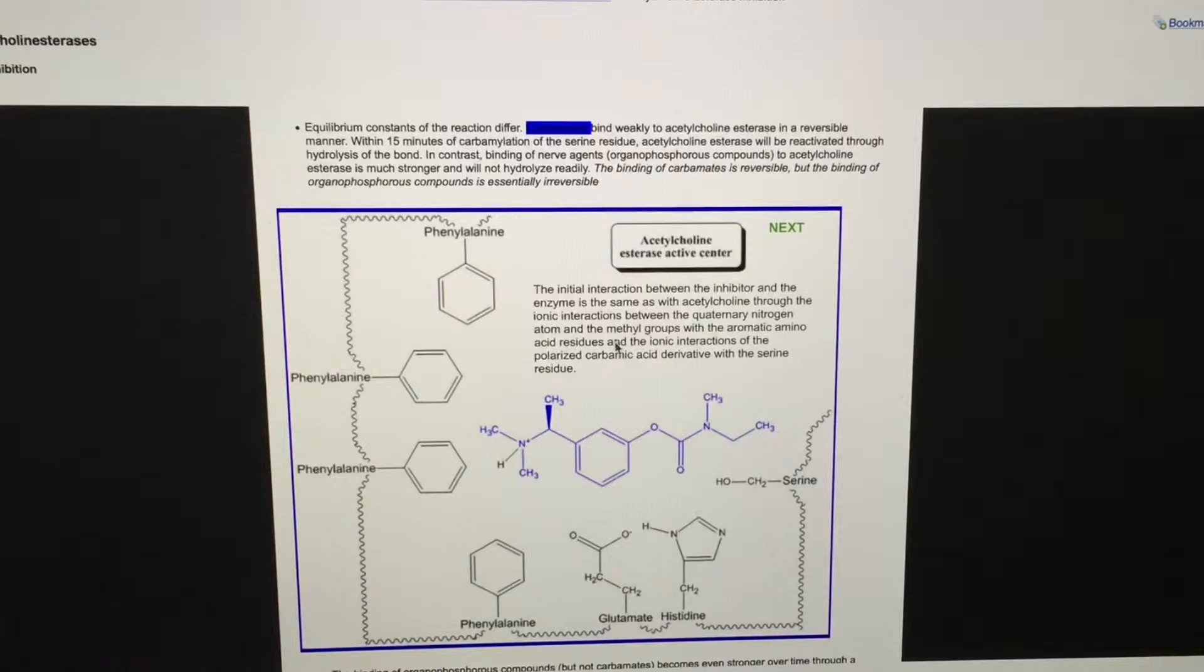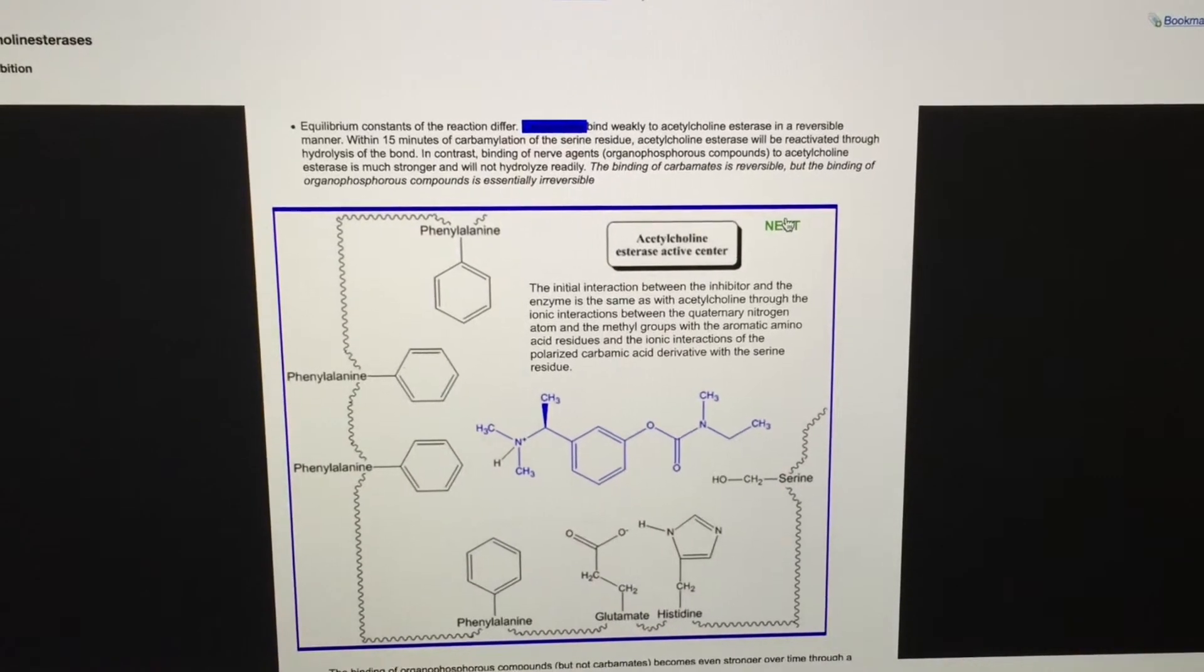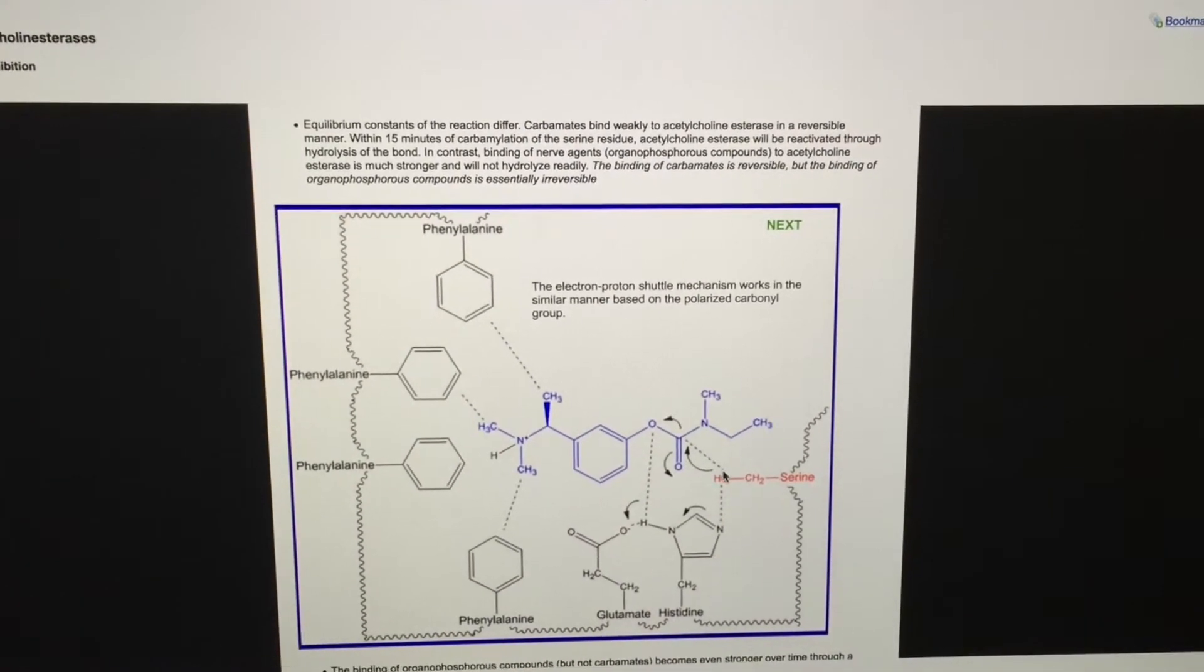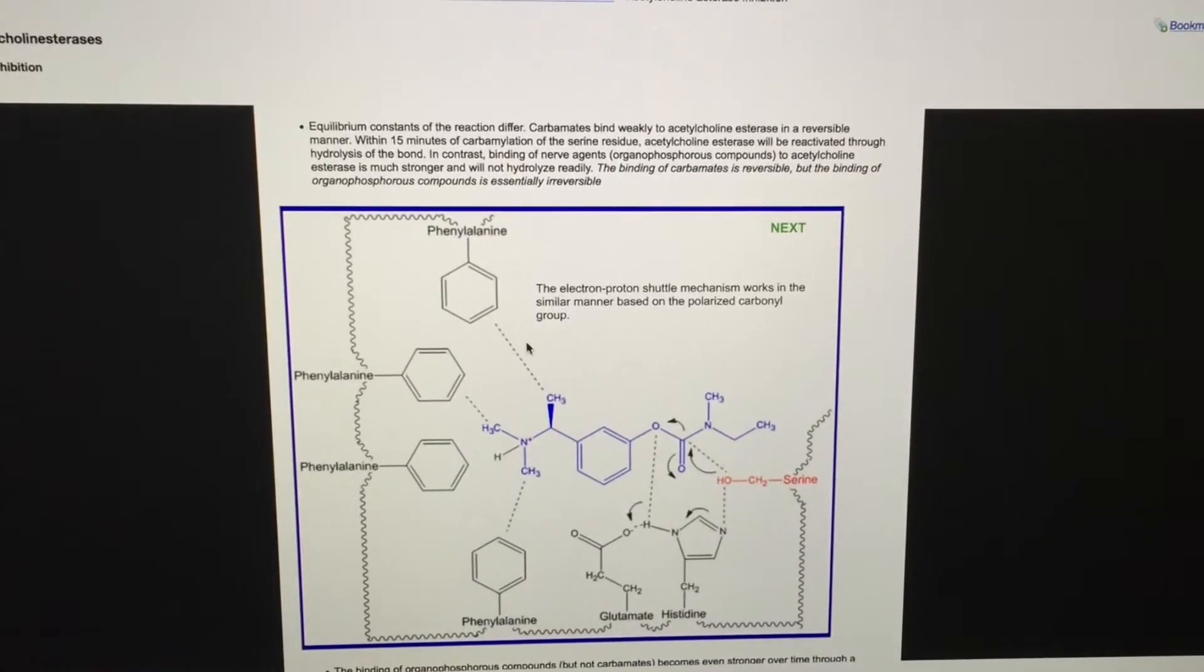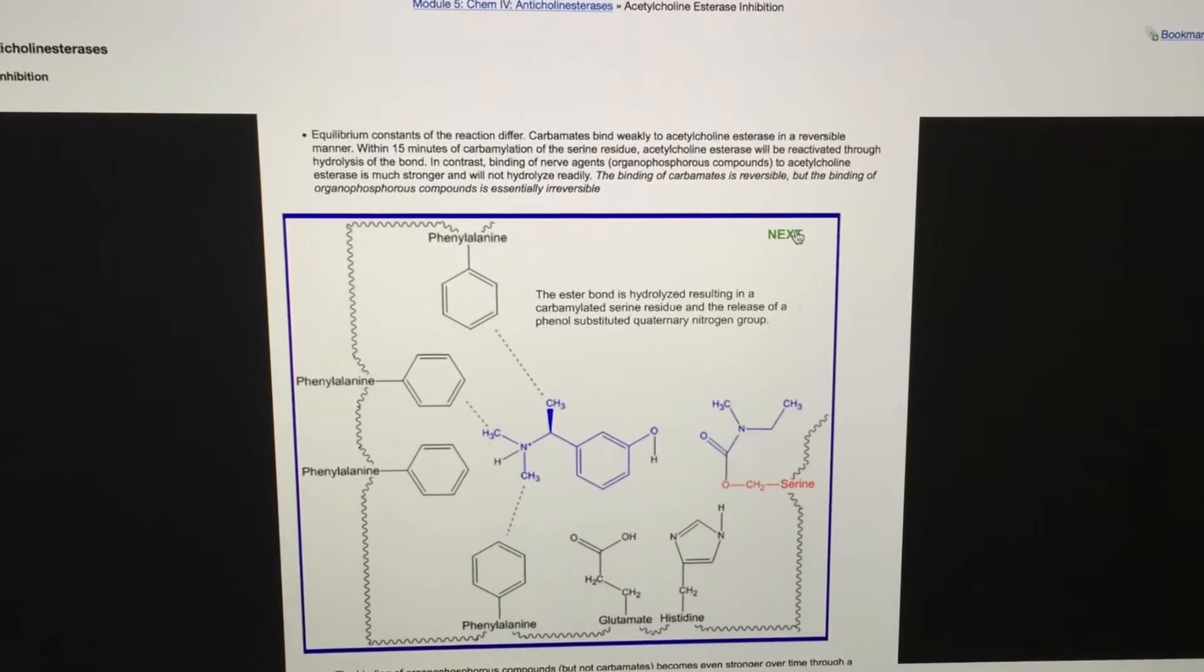This too is not unlike what occurred with the acetylcholine molecule. Following binding of the carbamate molecule to the acetylcholinesterase active site, a typical electron-proton shuffle occurs that sets up for a series of chemical reactions that will ultimately inhibit the enzyme.